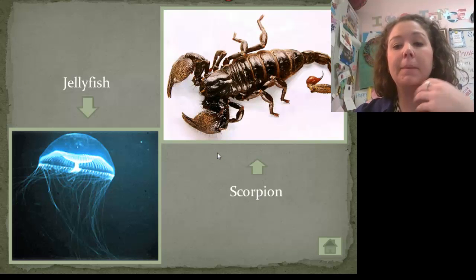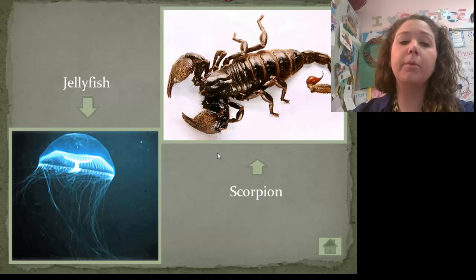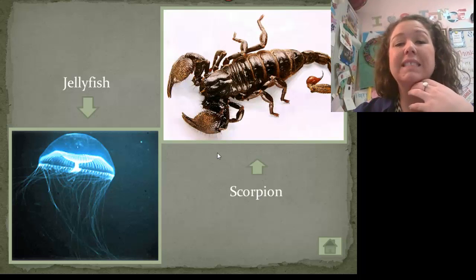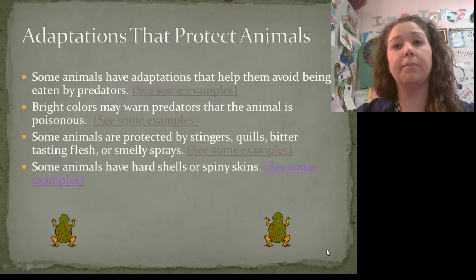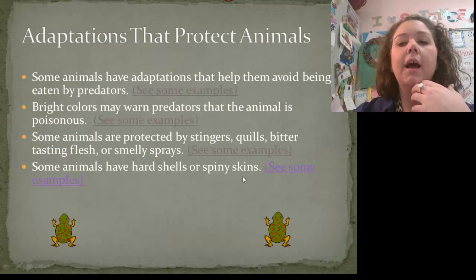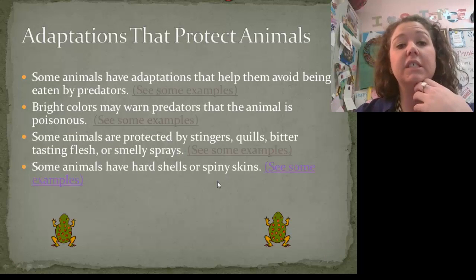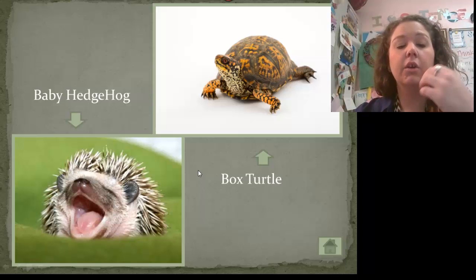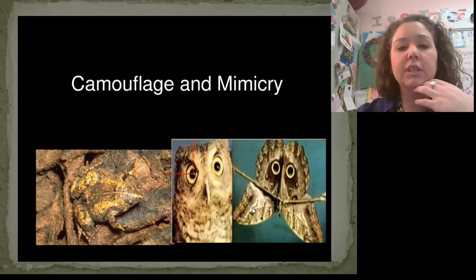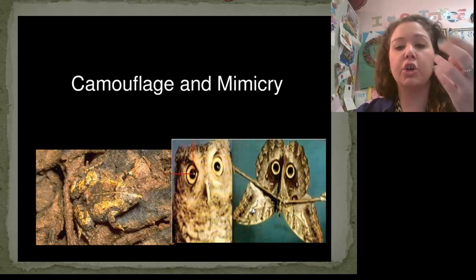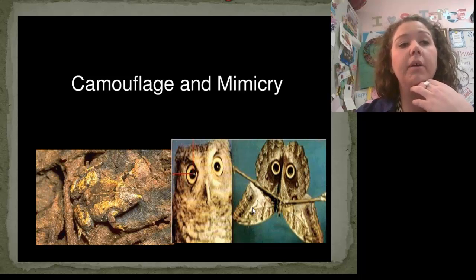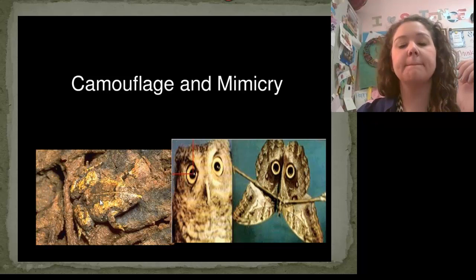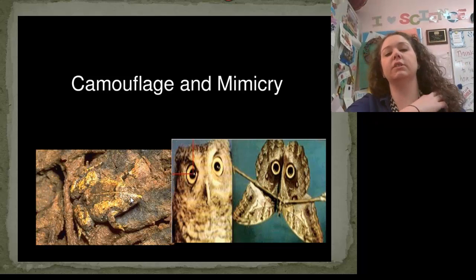Write down smells — that's another adaptation. Skunks can release an odor that scares any predator away. Other things like jellyfish and scorpions have stingers that help protect themselves from predators. Write down spiny or spines — we saw that in the cactus. Animals can also have spines, like the hedgehog, and the turtle has a hard shell with pokey things to help avoid getting eaten.